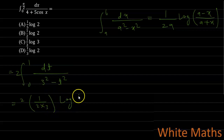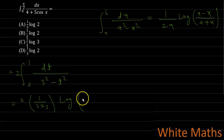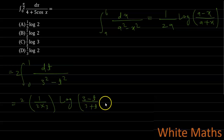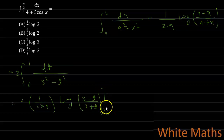Applying the formula with a = 3, the result is (1/3) log|(3 − t)/(3 + t)| evaluated from 0 to 1.